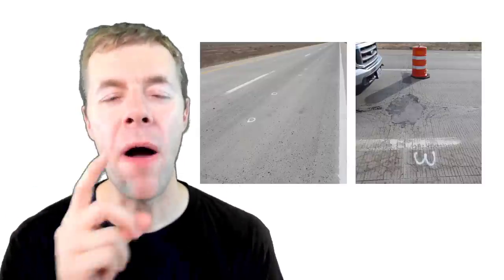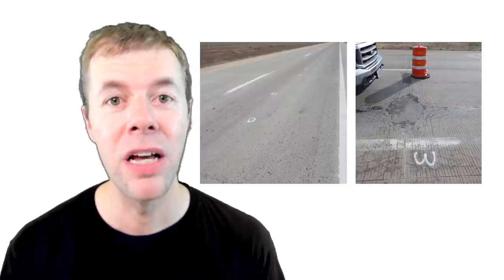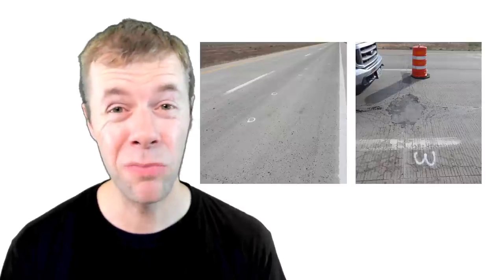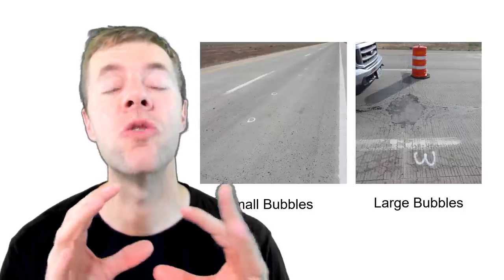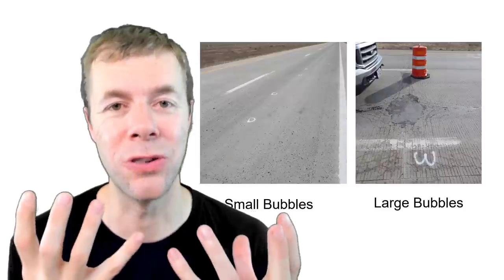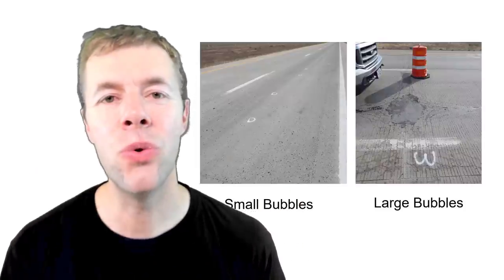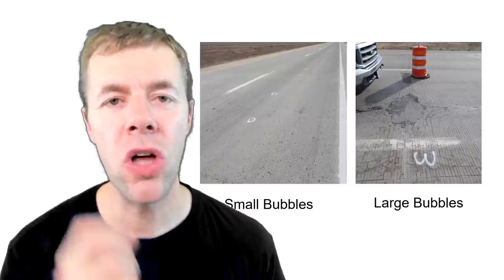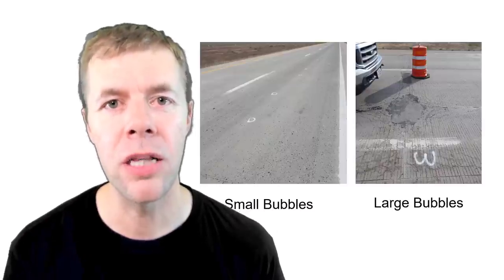Here's a project built by the same contractor using the same materials and the same specifications, but the one on the right, the one that's falling apart after about five years, the bubbles that were inside of them were mainly large. And the one on the left had small bubbles, the good ones, and it has to do with the freeze thaw durability of the concrete. Let me show you what I mean.